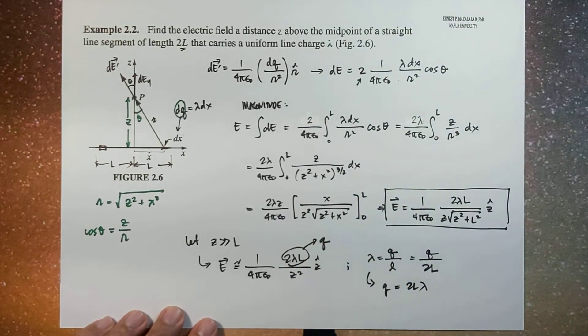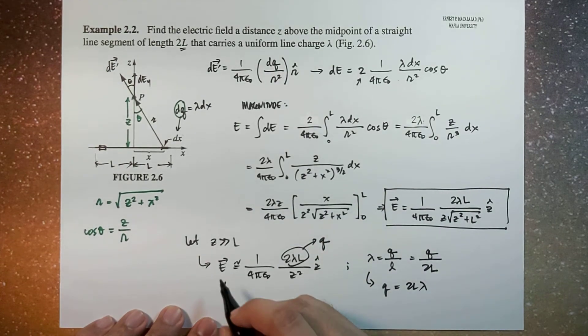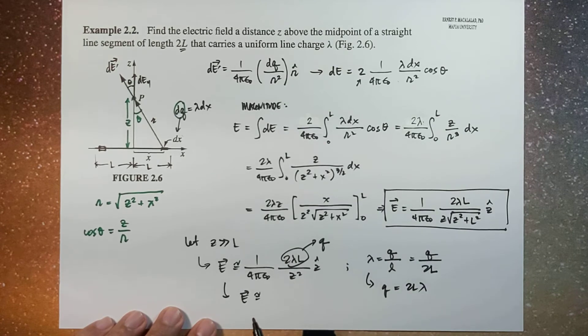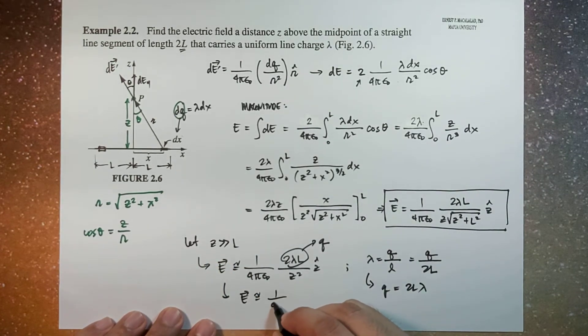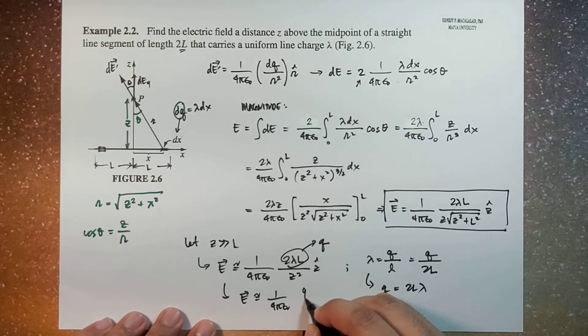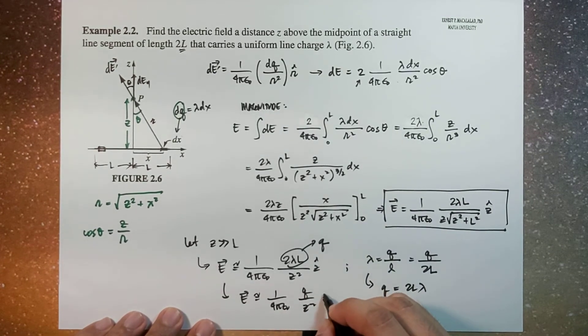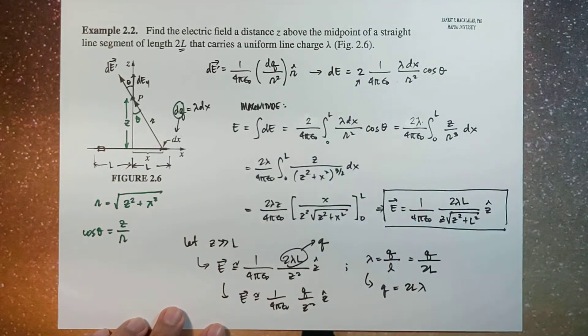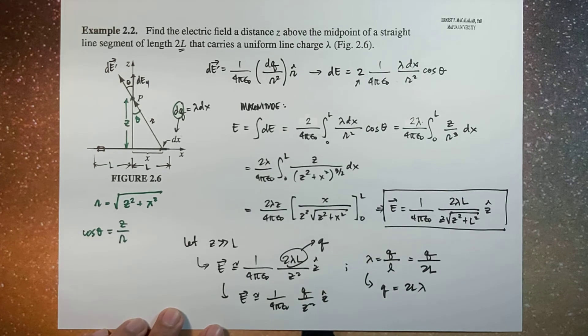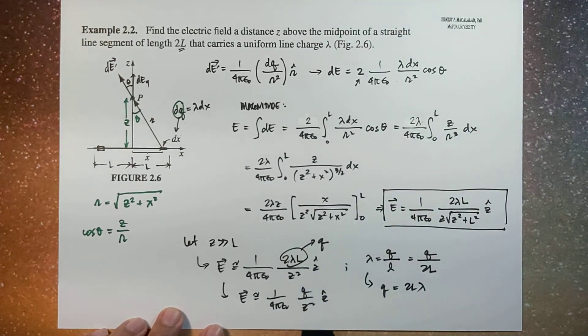This one is q. So in other words, the resulting equation or expression for the electric field for points far away from the line would be 1 over 4 pi epsilon naught times q over z squared z hat. So in other words, for points far away from the line, this line will appear as if it is just a point charge with total charge equal to 2 lambda L.